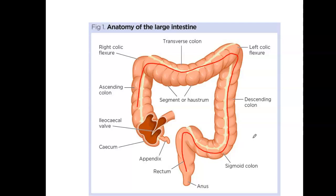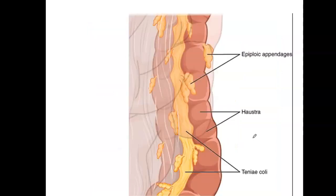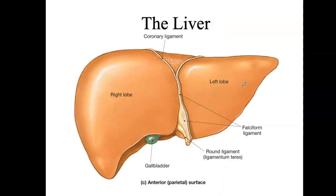Please practice those structures and now we're going to move on to the liver. This slide also has the epiploic appendages that I had drawn in for you in the last video. These are just little extensions of fat that come off the large intestine, and they are epiploic appendages — quite a mouthful. And now we go on to the liver.